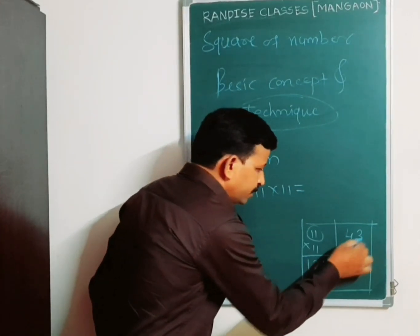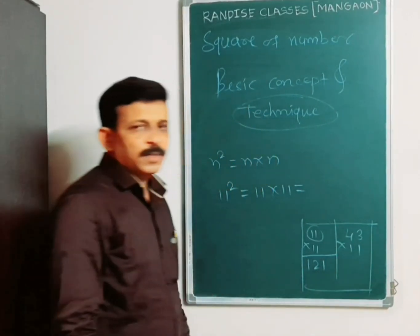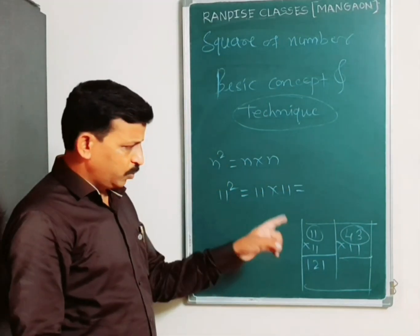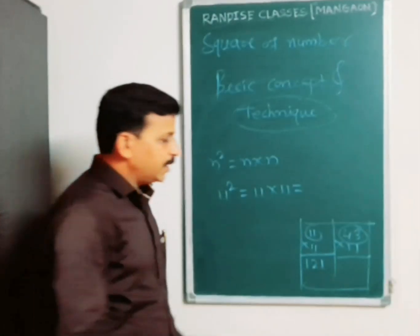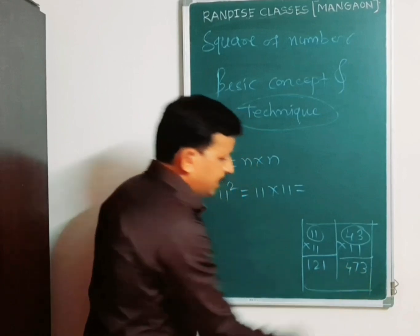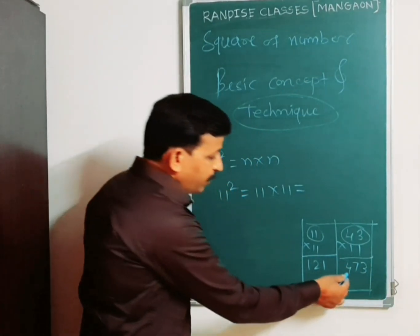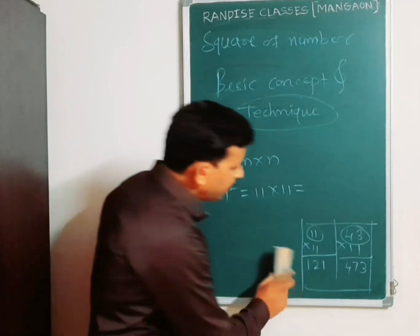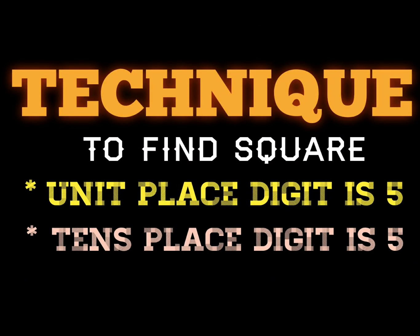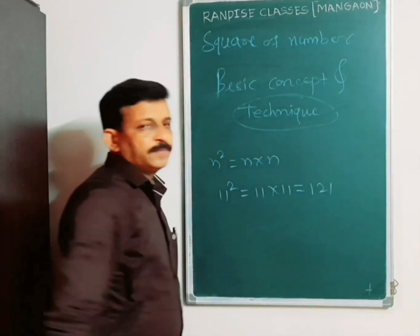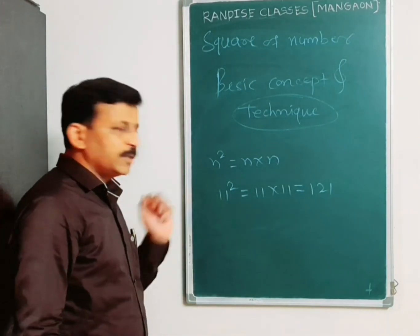Same thing: 43 into 11. Now adding the 2 digits: 4 plus 3 equals 7. Write 7 between 4 and 3 — that is 473, the multiplication of 43 and 11. Take enjoy in this multiplication! Now, just here: 11 square equals 121. That is the square of 11.